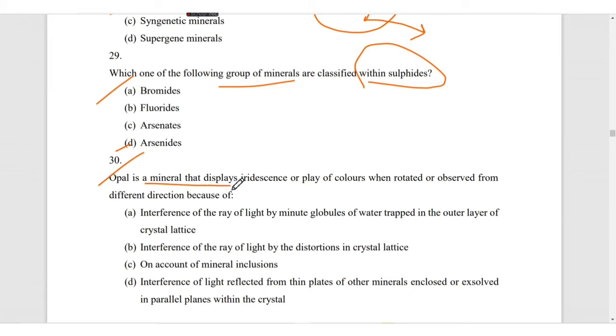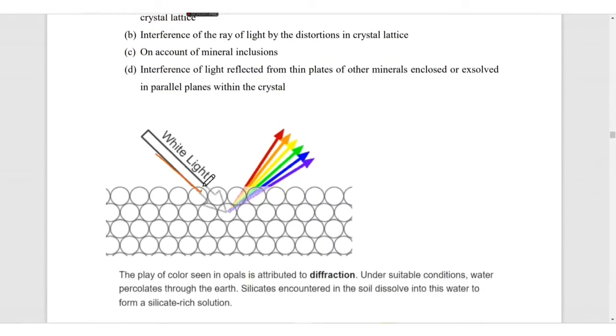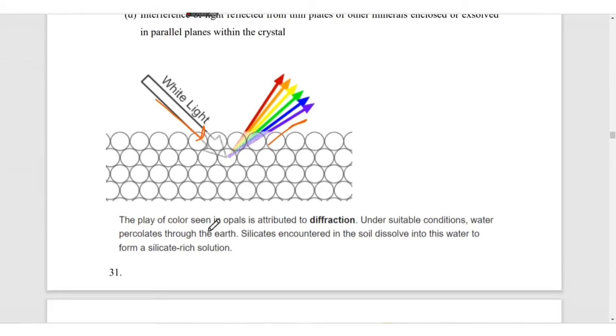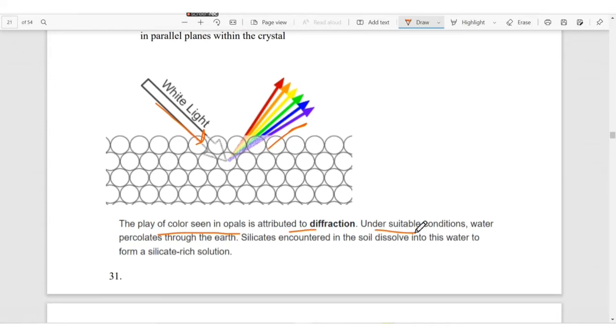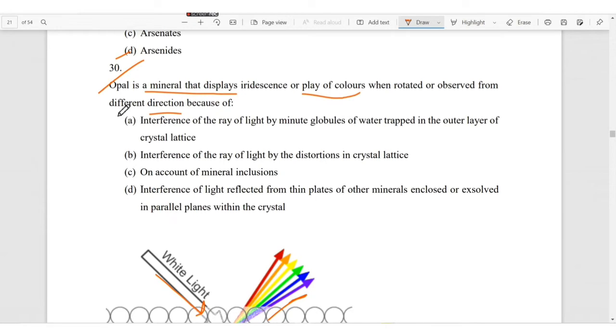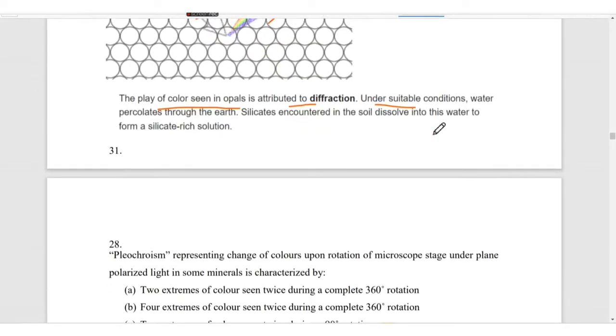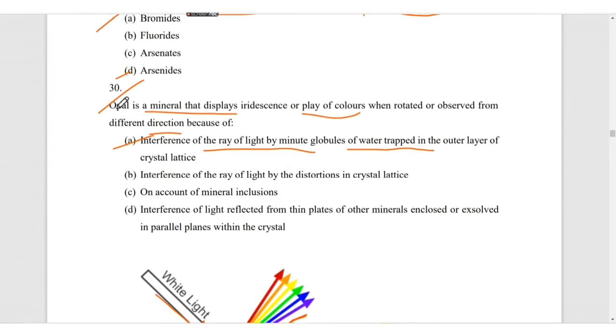Which one of the following groups of minerals are classified within the sulfides? For question 29 it is D, arsenides. Opal is a mineral that displays iridescence or play of color when rotated or observed from different directions. This is because due to diffraction. The play of color seen in opal is attributed to diffraction under suitable conditions. Answer will be A: interference of light by minute globules of water trapped in the mineral, because opal contains silica and water in its formula.